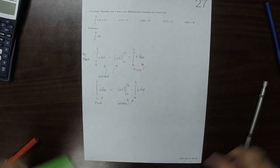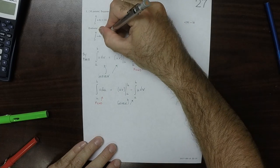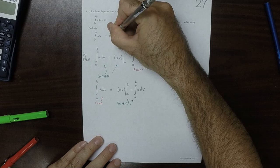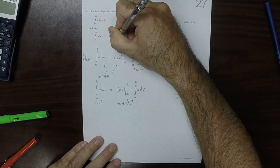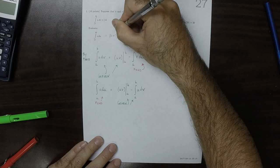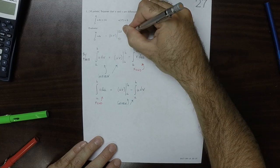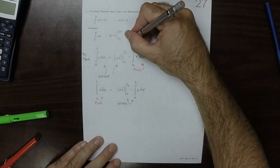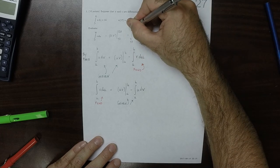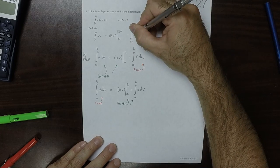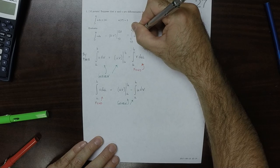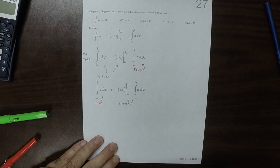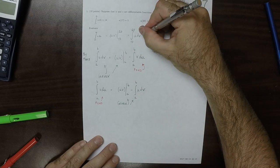So the answer to this question is UV evaluated from 17 to 20, minus the integral from 17 to 20 of U dV. We're given all of that information.